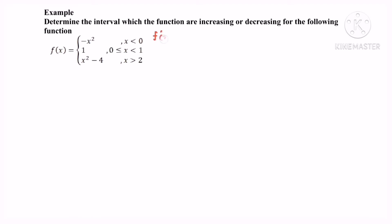For the first derivative f'(x), we have negative 2x for the first piece, 0 for the constant piece, and 2x for the third piece.